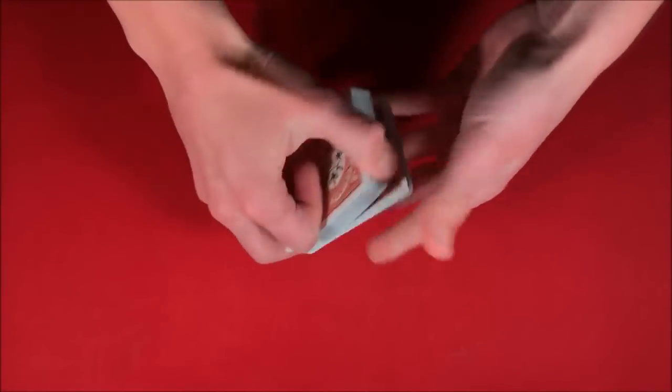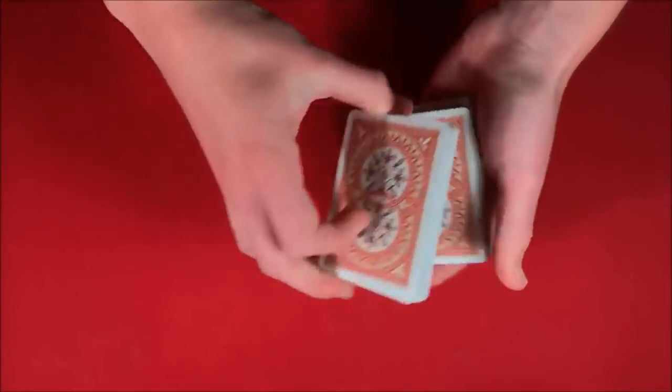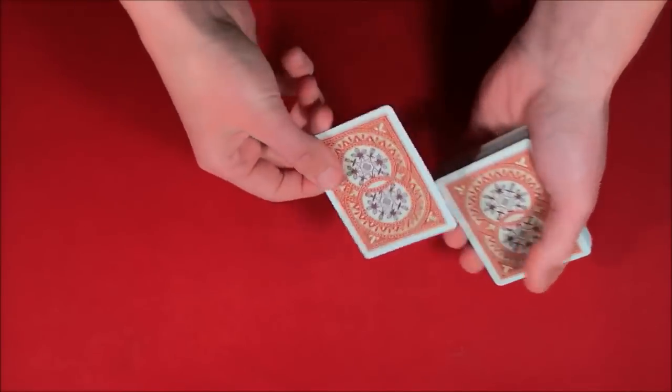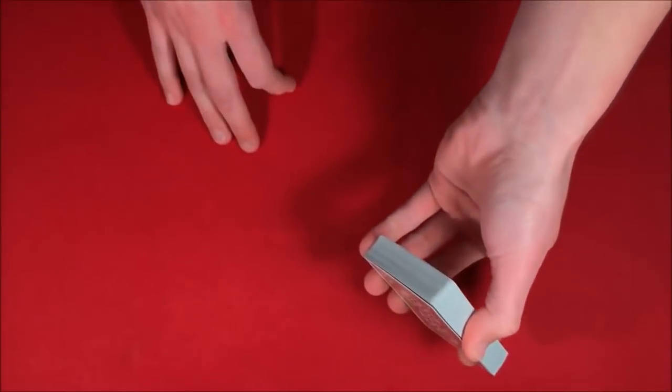Let's say you could have the spectator shuffle up the deck, and then what you could do is tell them, let's say we take the top card, in this case the five of clubs. You tell them you're going to take the five, put it into the middle, and you show them that you don't really know exactly where it is.